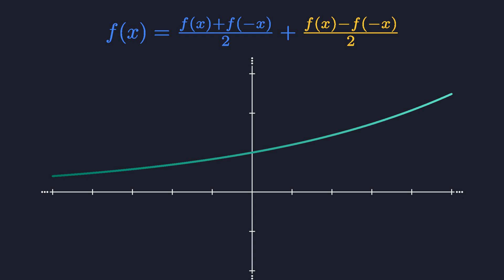If we do this for the exponential function, we obtain the well-known hyperbolic sine and cosine, which is definitely cute.